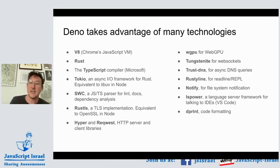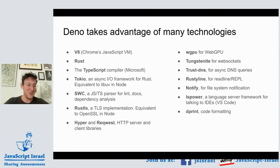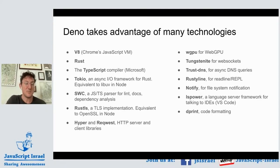We use rust-tls instead of OpenSSL, hyper and reqwest as HTTP libraries in Rust, wgpu for the WebGPU implementation, tungstenite for WebSockets, and so on. One of the main advantages of Rust, as I see it, is the crate system and its defined build system. When we built Node, C++ was very difficult — so difficult to link in third-party libraries that I ended up writing an HTTP server from scratch to implement Node's HTTP libraries. It's just not very possible to simply link in third-party C++ code.